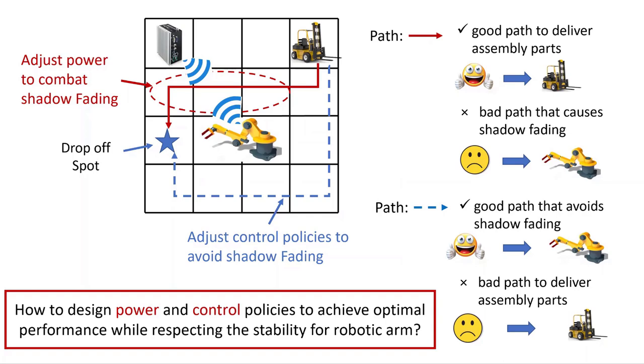Although robotic arm and forklift are cooperated to achieve the overall assembly task, the individual goals may be different and conflicting. For instance, the path marked in red is a good choice for forklift because it allows shorter distance to reach the drop-off spot. It is however a bad path for robotic arm because it causes shadow fading along the way. On the other hand, the blue dashed path is a good choice for robotic arm but bad path for forklift. To achieve their individual goals, the robotic arm may adjust transmission power to ensure its stability while the forklift may adjust its control strategy to achieve optimal delivery performance.